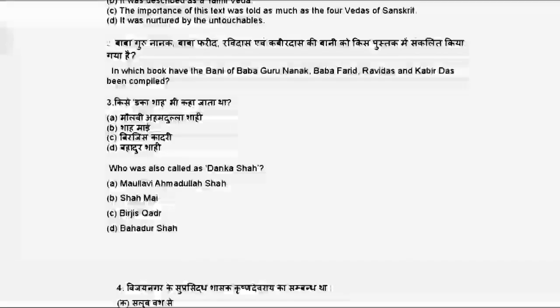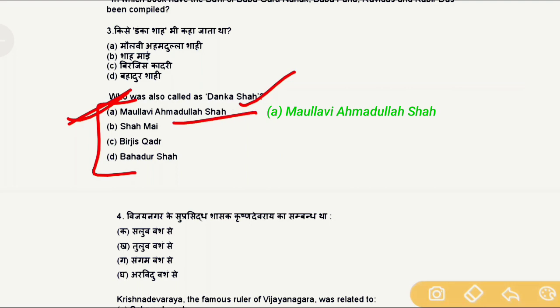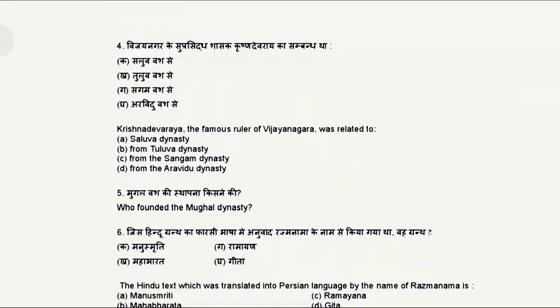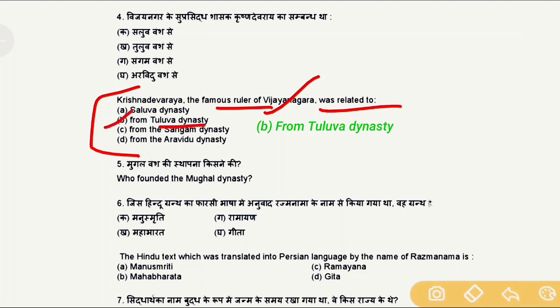Question 3: Who was also called Danka Shah? The answer is option A, Maulvi Ahmadullah Shah. Question 4: Raja Krishnadeva Raya, the famous ruler of Vijayanagara, was related to which dynasty? The correct answer is option B, the Tuluva dynasty.